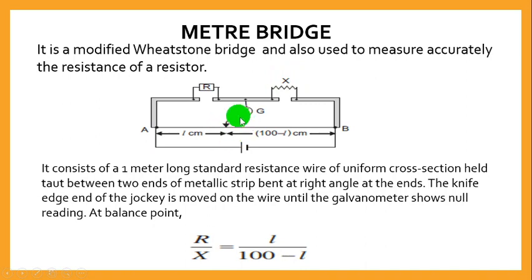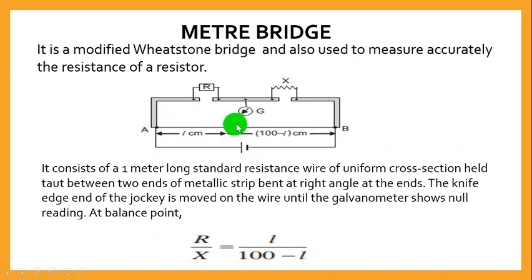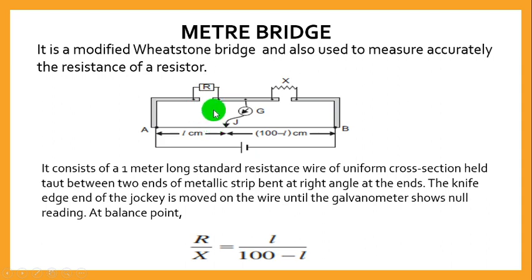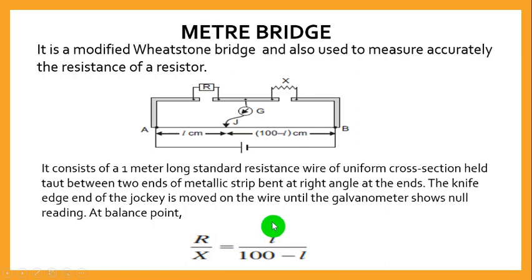Just like the previous experiments, you adjust the position of the jockey until there is no deflection. At that point, you measure the length L. Since the total length of the meter bridge is 100 centimeters, the second length is 100 minus L. The formula used is: R over X equals L over (100 minus L), or equivalently, R over L equals X over (100 minus L).